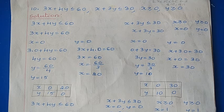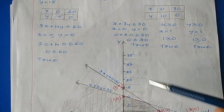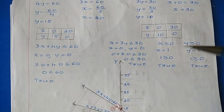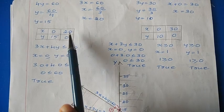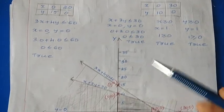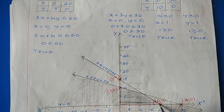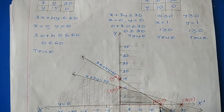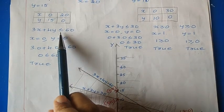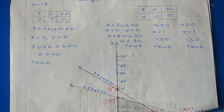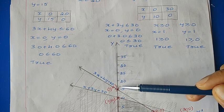Now we can draw the graph for these four inequalities. I have taken a plane divided into x-axis and y-axis. First consider the inequality 3x plus 4y less than or equal to 60. We have the points (0, 15) and (20, 0). Combine these two points by drawing a solid straight line, because this is a slack inequality. This line represents 3x plus 4y equal to 60.